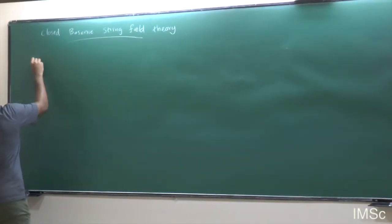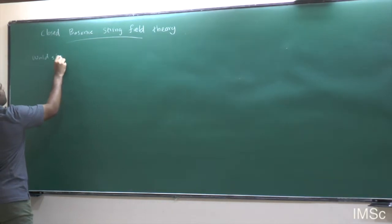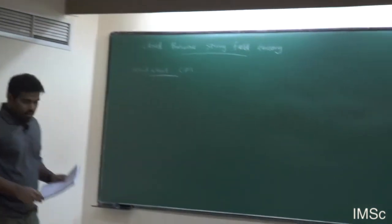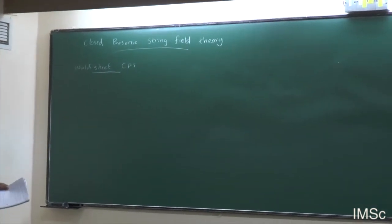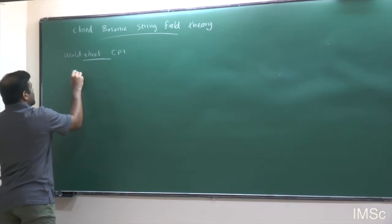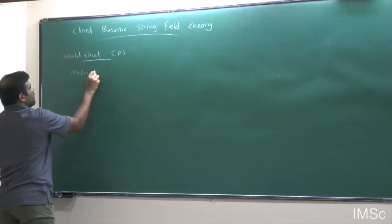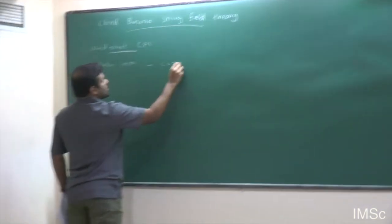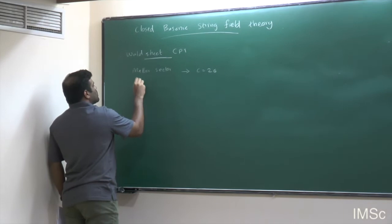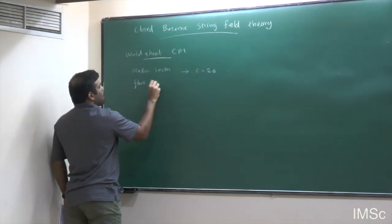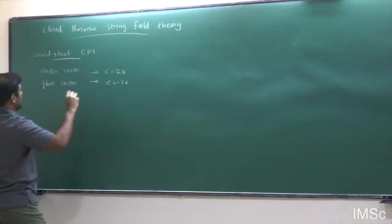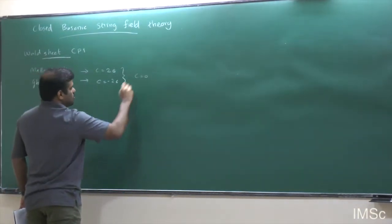Let me briefly mention some aspects of world sheet conformal field theory for a bosonic closed string theory. The world sheet CFT has two sectors: one is the matter sector, the CFT having central charge 26, and the ghost sector having central charge minus 26, so the full world sheet CFT has central charge equal to 0.